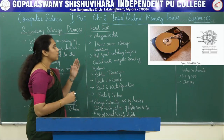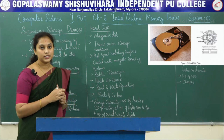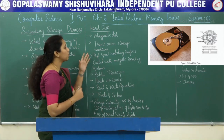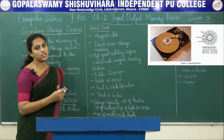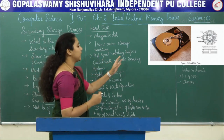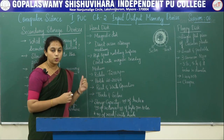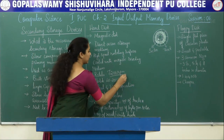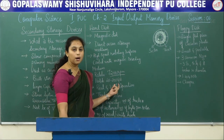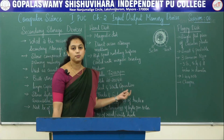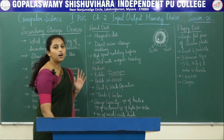Now let's look at hard disk. A hard disk is a magnetic disk on which you can store computer data. It is a direct access storage medium, meaning you can store and retrieve data randomly. It has high-speed rotating surfaces coated with magnetic recording medium, rotating at a speed of 7000 rotations per minute. Modern hard disks can hold up to 40 to 200 GB of data, and you can perform read and write operations on them.